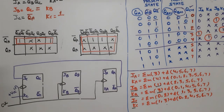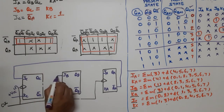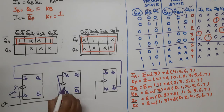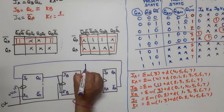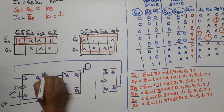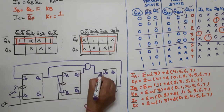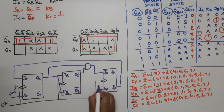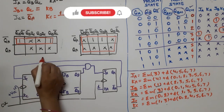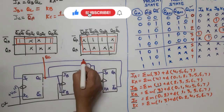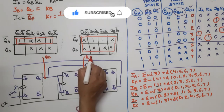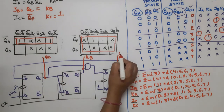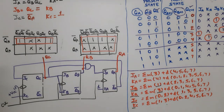For JB and KB, since both equal QC, we short JB and KB together and connect them to QC from the LSB flip-flop. For JA = QB·QC, we use an AND gate with inputs QB and QC, and the output goes to JA. For KA = 1, we connect logic high to KA. The outputs QC, QB, QA are taken from the respective flip-flops. This is the final circuit of the mod-5 synchronous up counter using JK flip-flops.